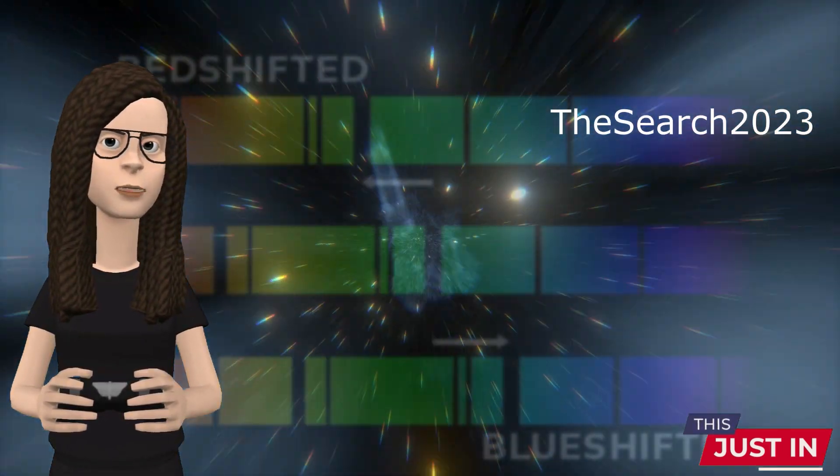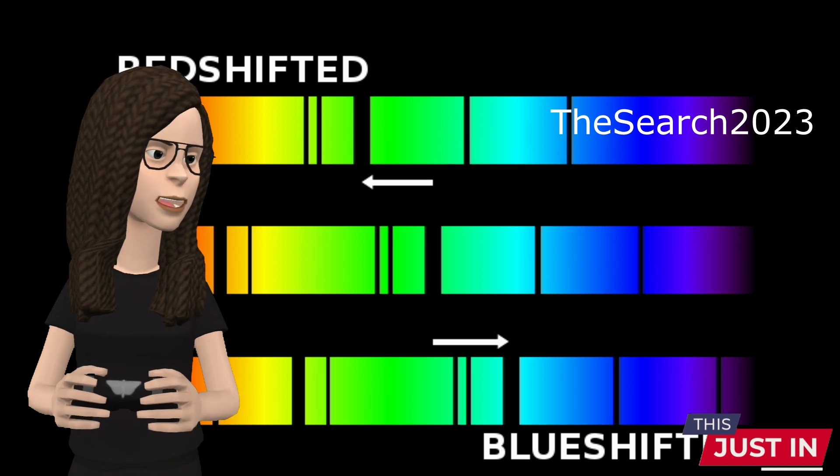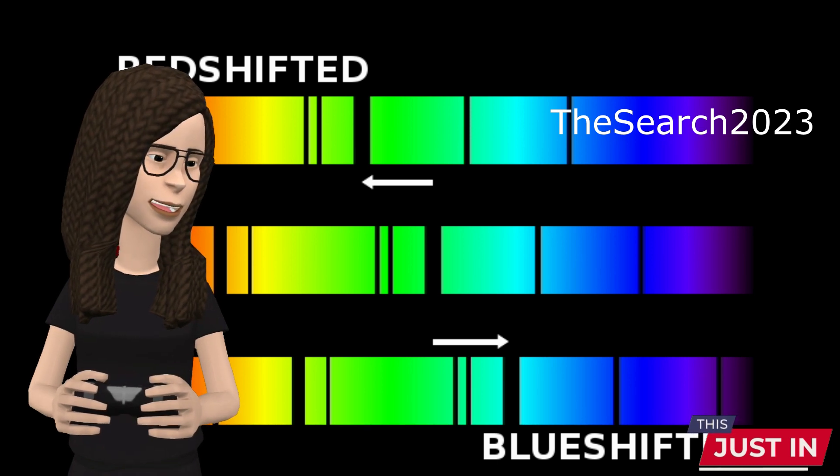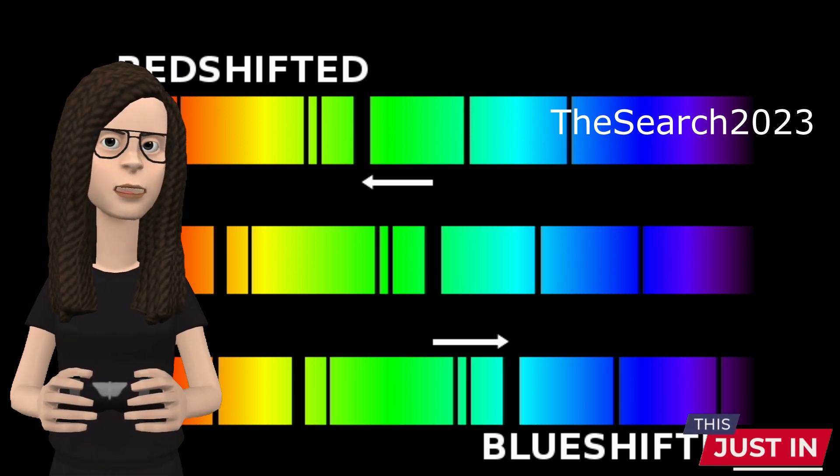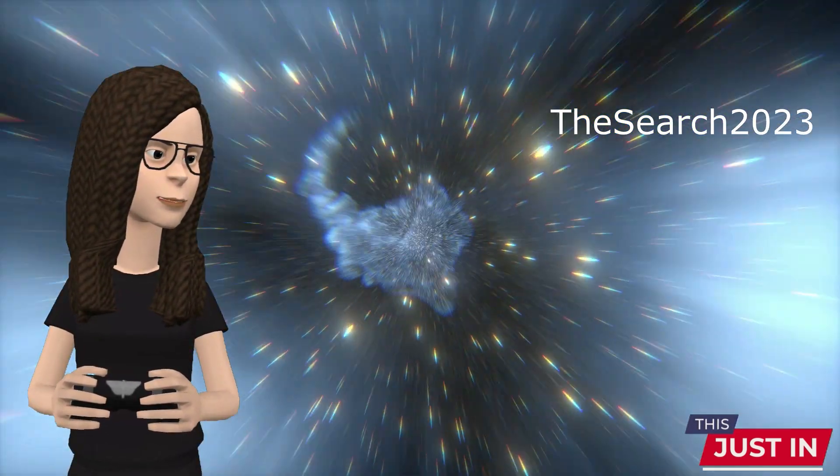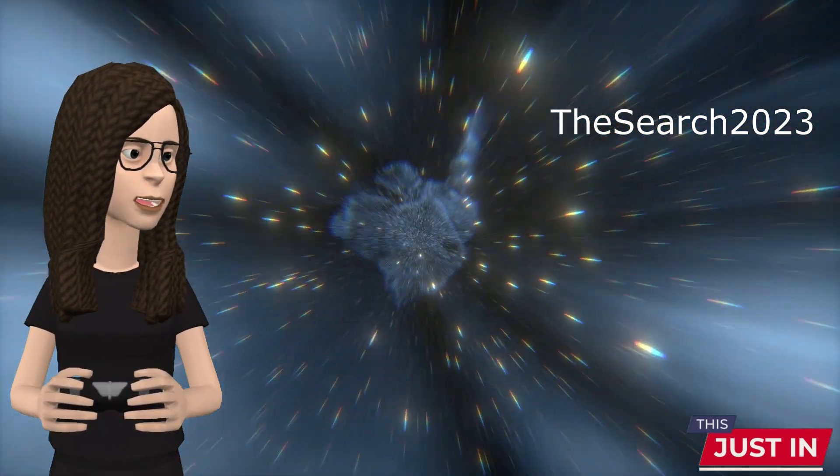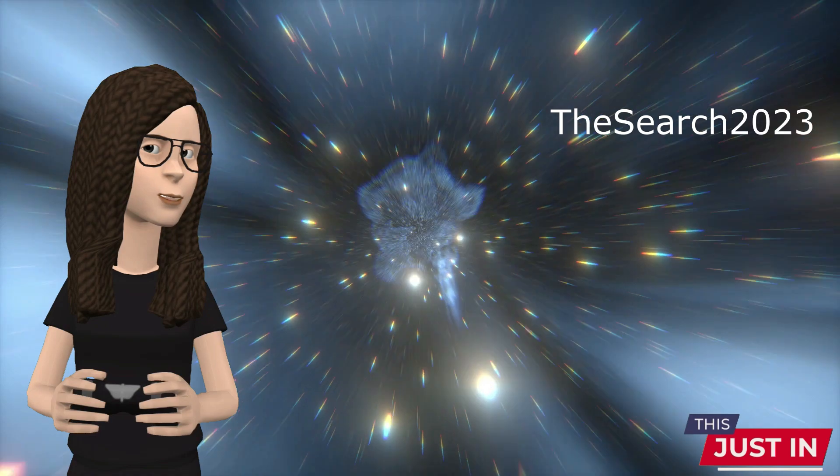Redshift is a key concept for astronomers. The wavelength of the light is stretched, so the light is seen as shifted towards the red part of the spectrum. Something similar happens to sound waves when a source of sound moves relative to an observer. This phenomenon is a fundamental observation in the field of cosmology and is a key piece of evidence supporting the Big Bang Theory.